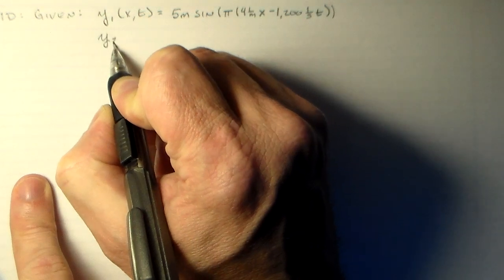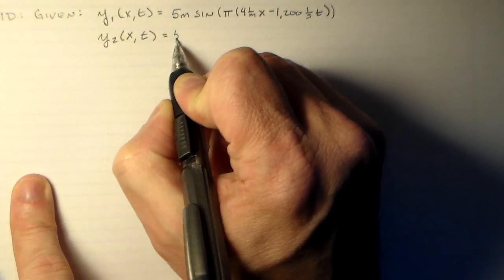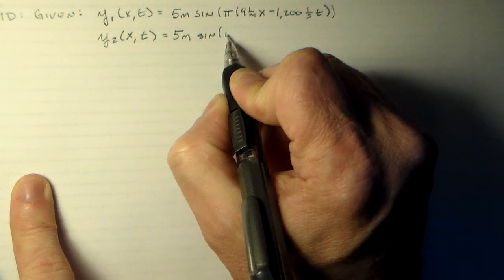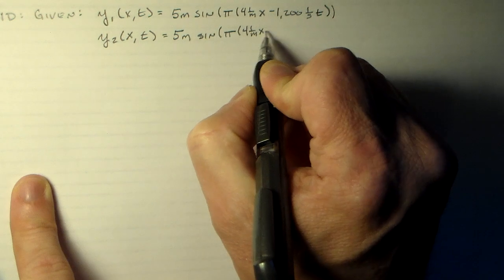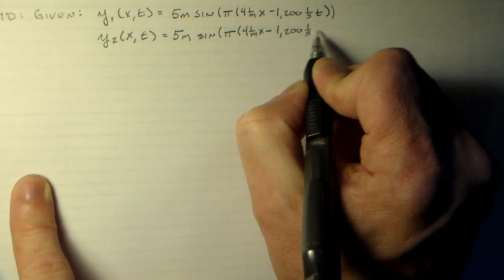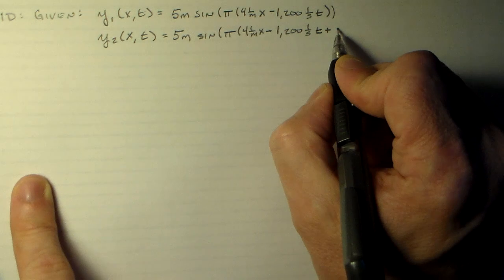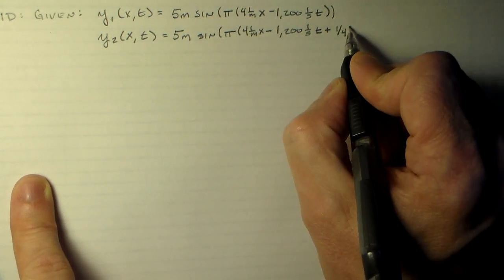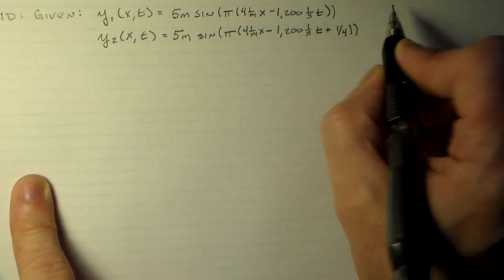We need two of those guys. We need y2, which will be of x and t again. And this has 5 meters sine of pi 4, 1 over m, x minus 1200 hertz times time plus a phase chain or phase lag of one quarter. So this is actually pi over 4. All right, so these are the two waves.